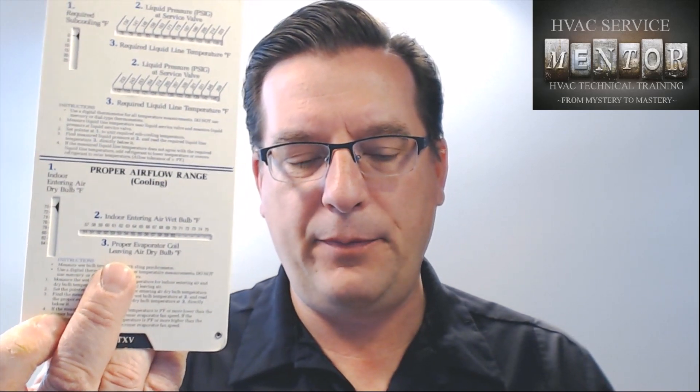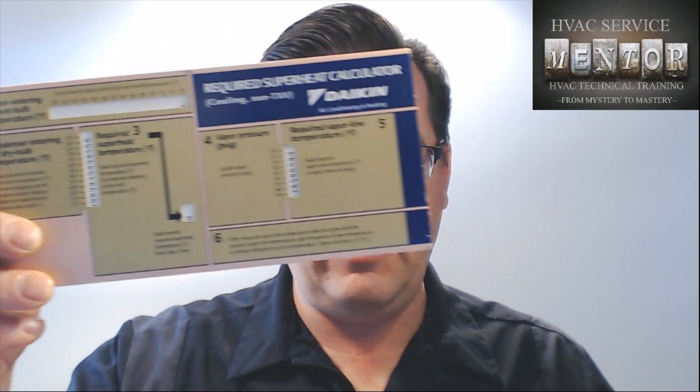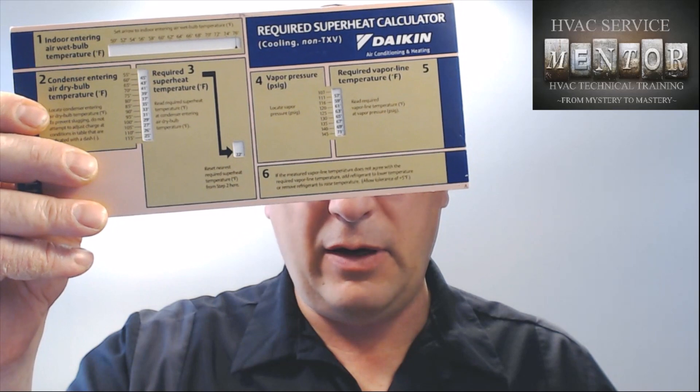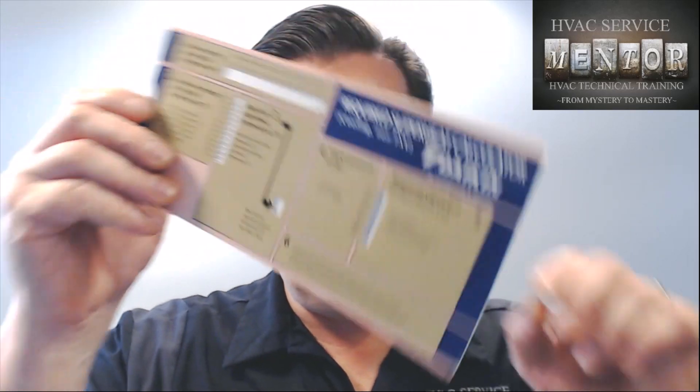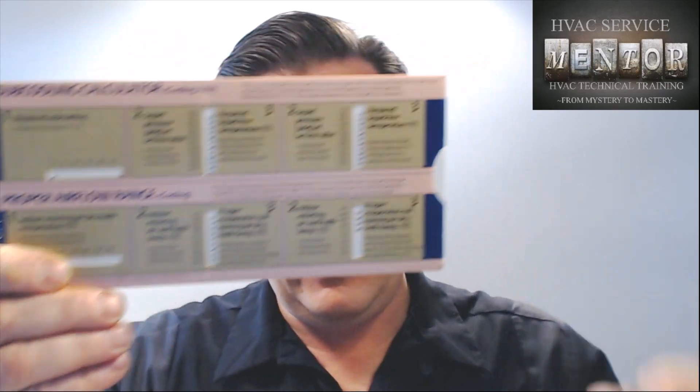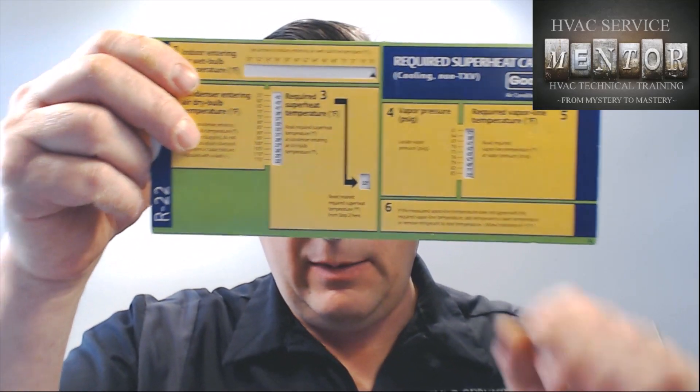That cheat sheet was created by my service manager at the time, and it came from one of these slide charts. This one is published by Carrier — a little slide chart that tells you how to charge air conditioners by superheat, by subcooling, and it has the airflow range on the bottom. I've got another one here from Goodman — this one says Daikin on it but it's the same one. This one's for R-410A and has superheat on one side and subcooling and airflow on the bottom. This other one is R-22, which says Goodman on it.